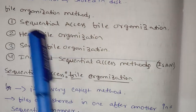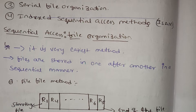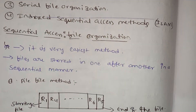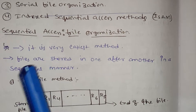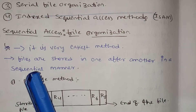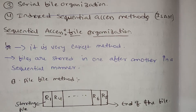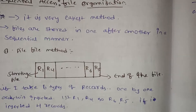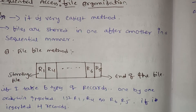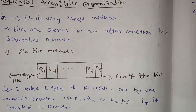This is serial file organization and this is sequential access file organization. Sequential access file organization is very easy — files are stored one after another in a sequential manner. In sequential access file organization we have two types of methods: the pile file method and the sorted file method.